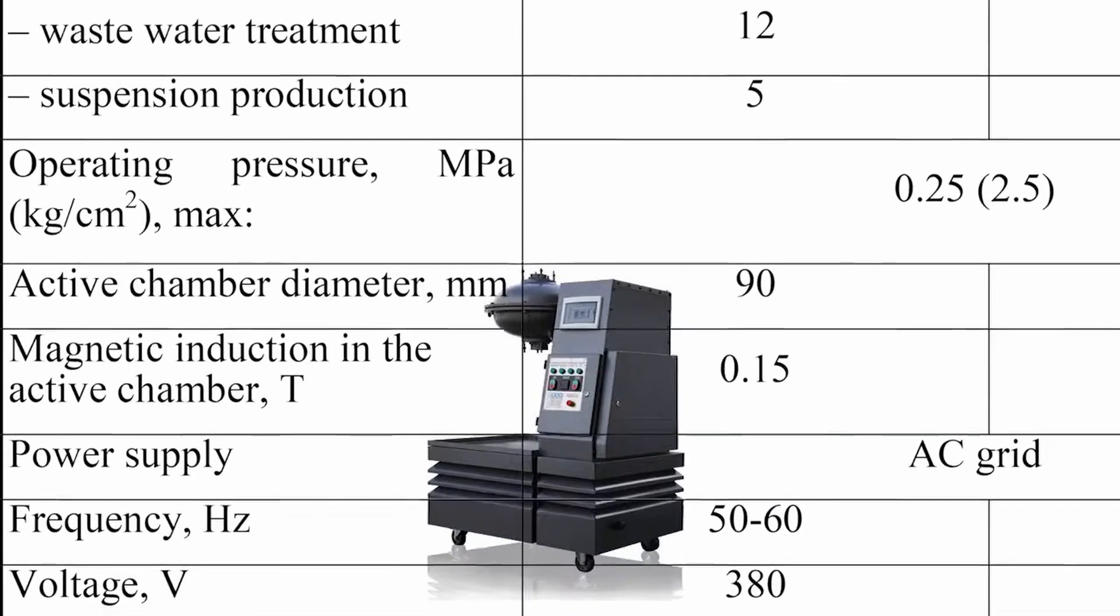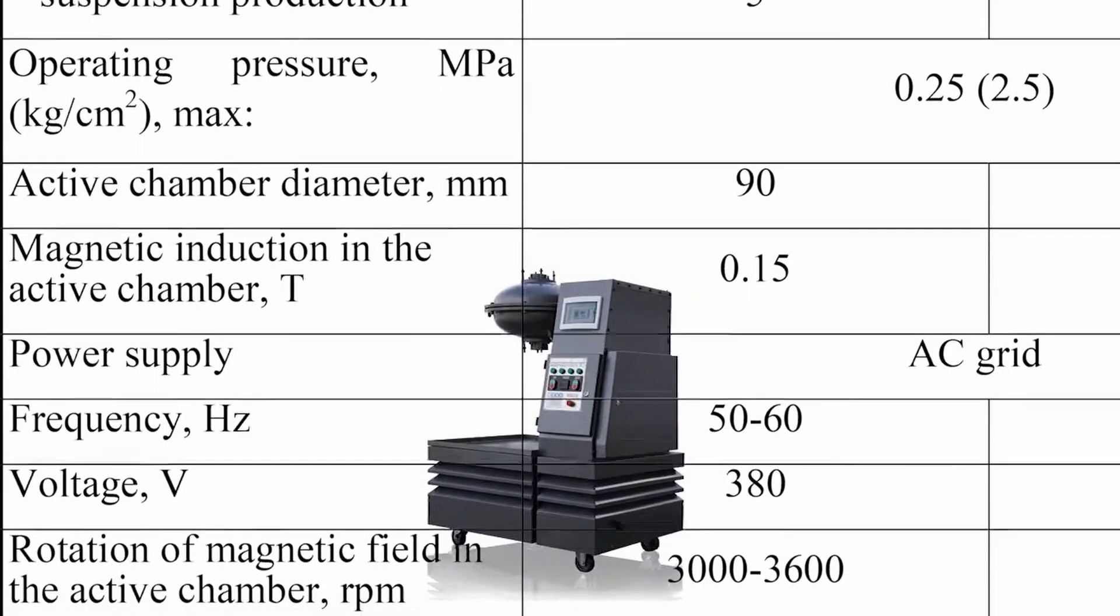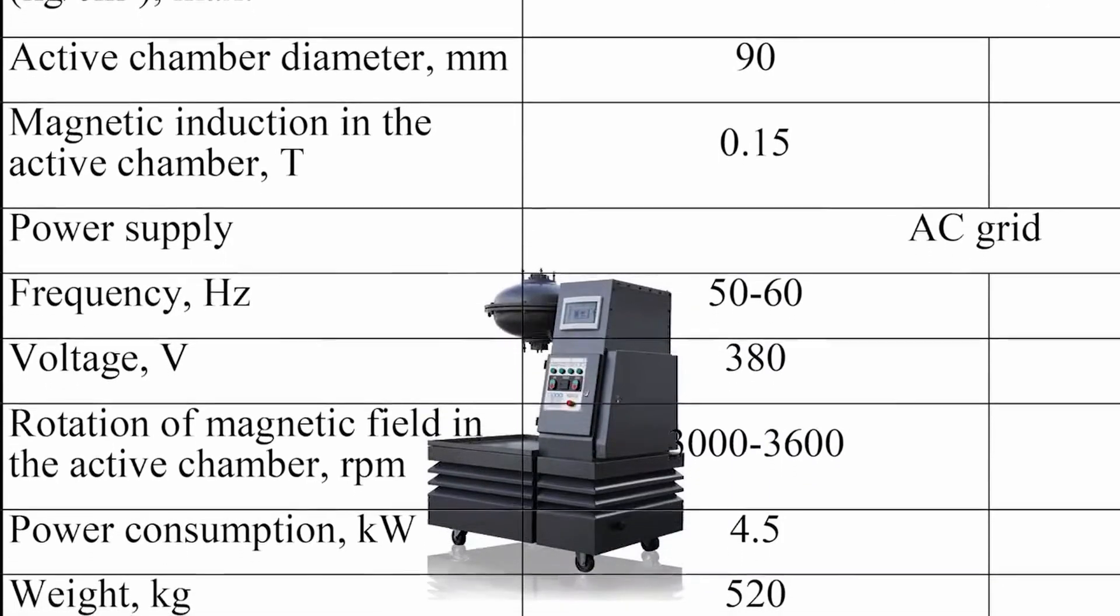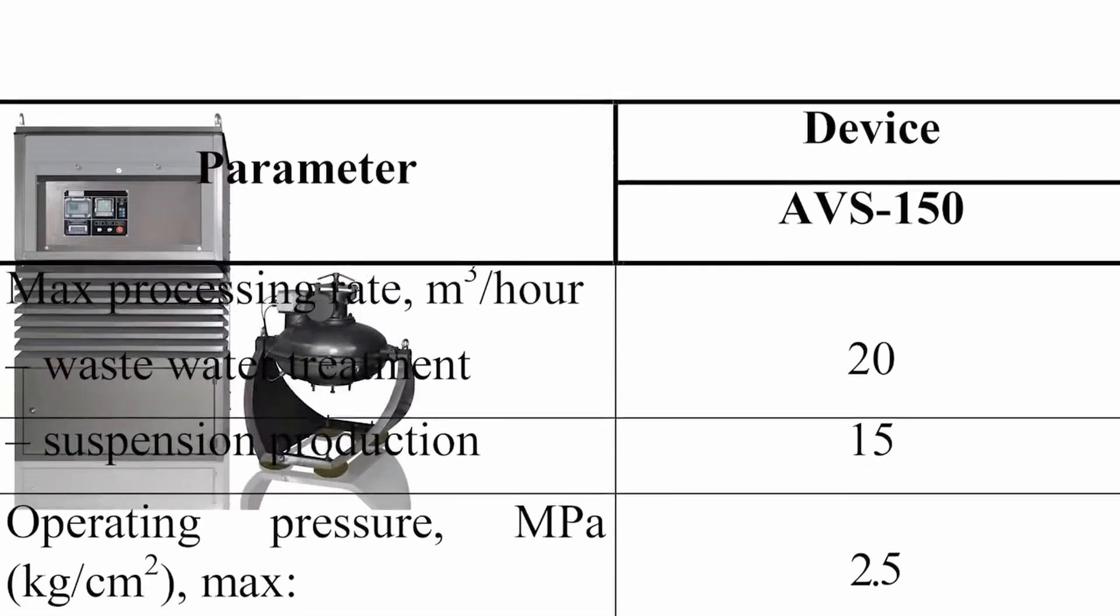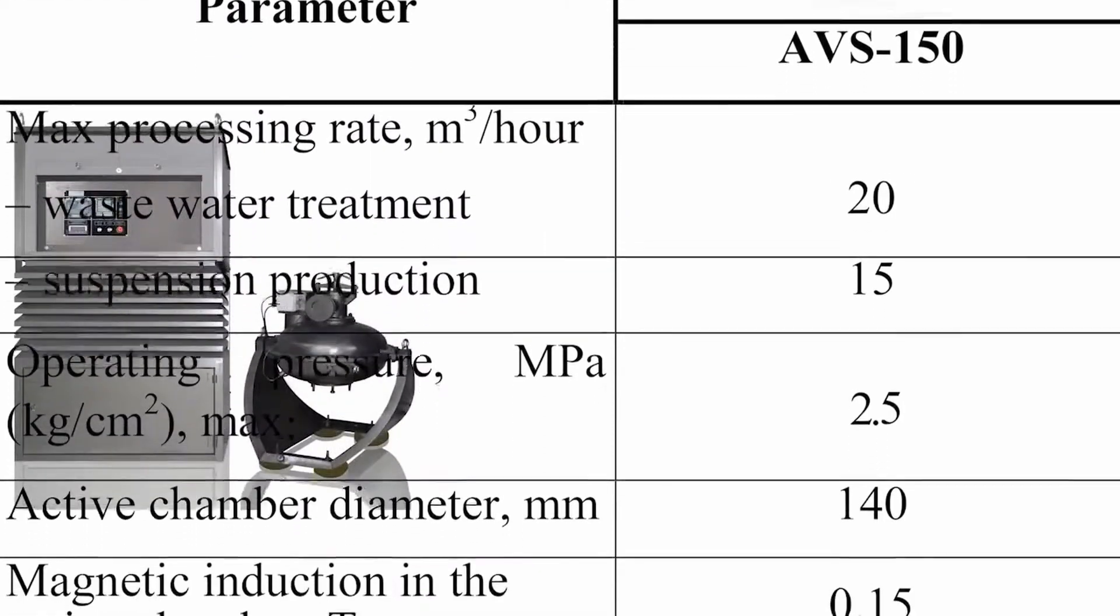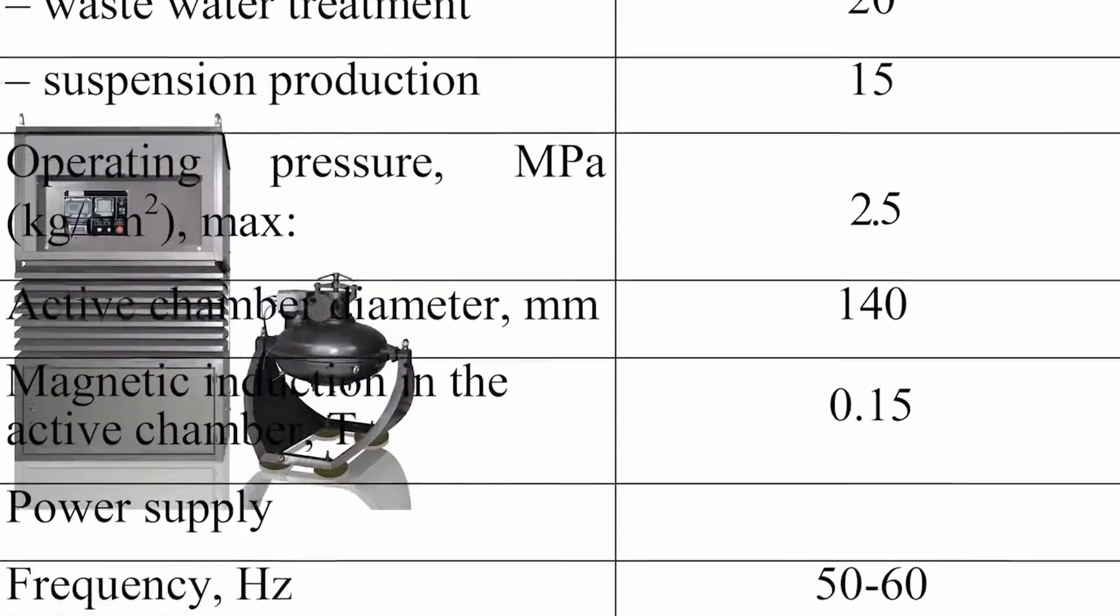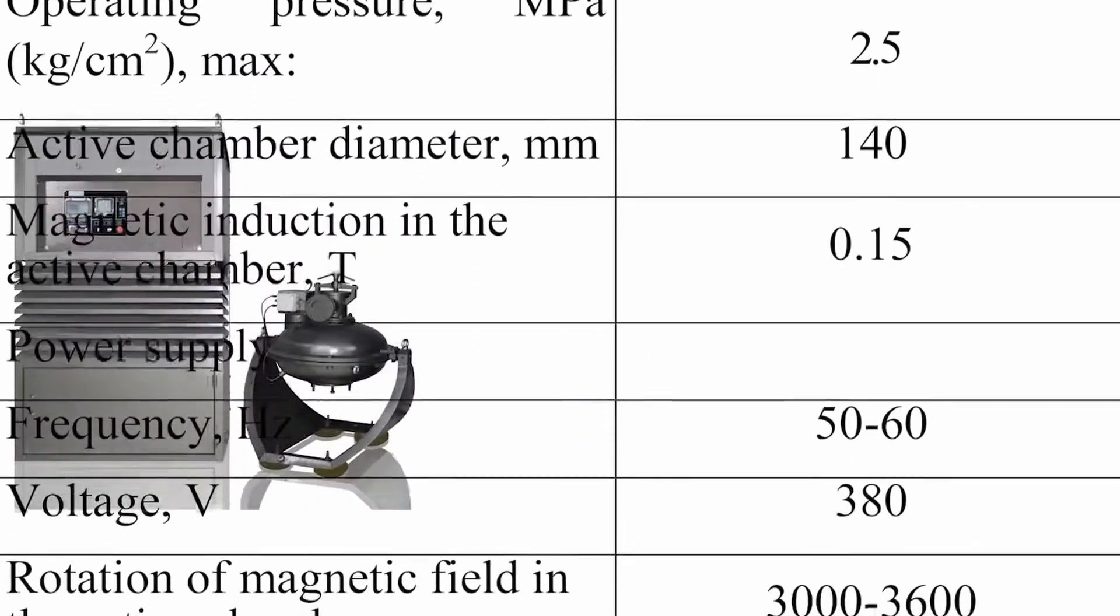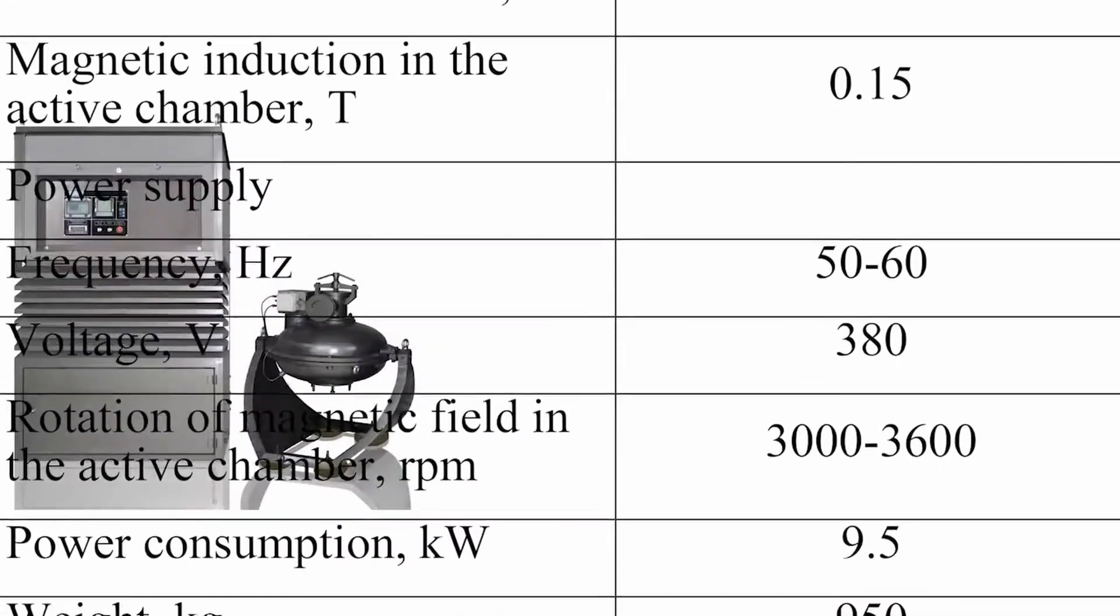For AVS-150 device: the maximum capacity during wastewater treatment is 20 cubic meters per hour; when obtaining the suspension, it equals 15 cubic meters per hour; maximum operating pressure, 2.5 megapascal; rotation speed of magnetic field, 3000 revolutions per minute; power consumption, 4.5 kilowatts per hour.